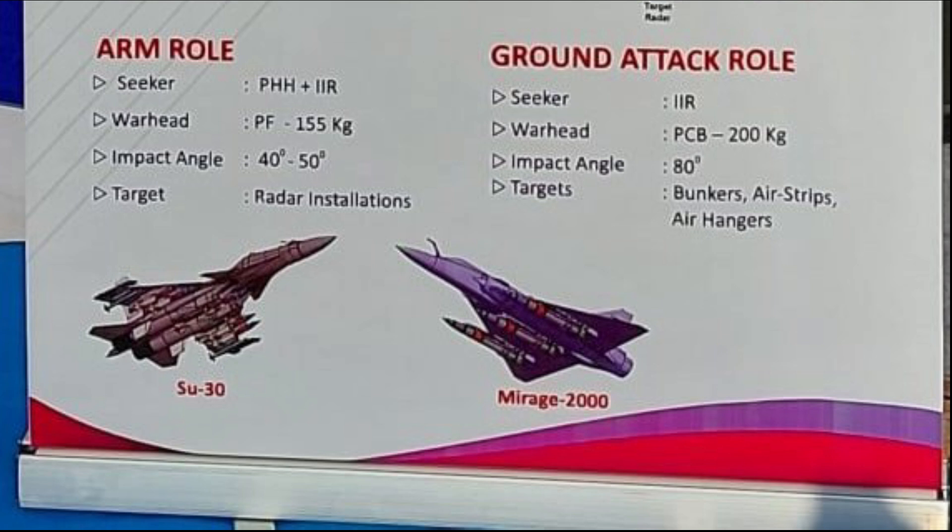When used as an ARM missile, it will feature a dual seeker with a passive homing head and an IIR seeker, which makes it jam-proof and enhances the accuracy of attack. While the passive homing head enables the missile to track sources radiating radio waves — such as surface-to-air missile systems, fire control radars, or surveillance radars — the IIR seeker can assist in differentiating between a decoy and the actual target. In ARM role, the warhead used is a pre-fragmented one with a weight close to 155 kg, and its angle of attack will be between 40 to 50 degrees.